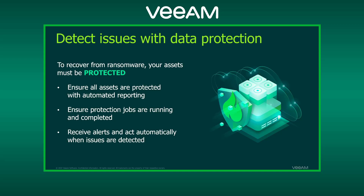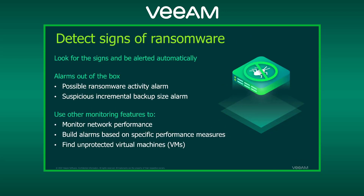We're going to receive alerts and act automatically if issues are detected. For example, if a ransomware alarm triggers, we might want to take action. Out of the box, we have a possible ransomware activity alarm that tells us a VM is acting unusual — lots of writes, high network transmission, high CPU — all signs it might be encrypting something. Based on that alarm, you might run a script to disconnect the VM or run a SureBackup job with Secure Restore, which scans your VM for ransomware, checks if anything's hiding, and lets you take action.